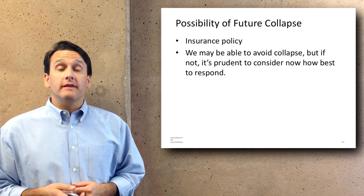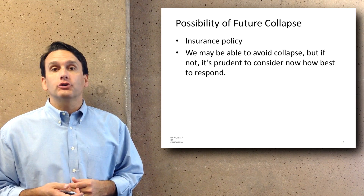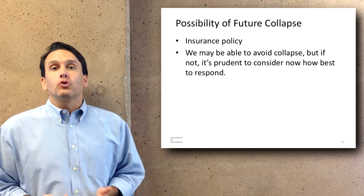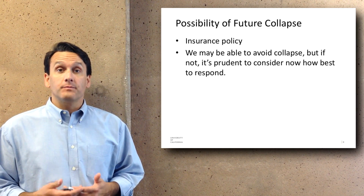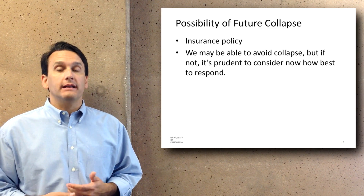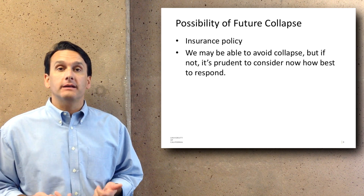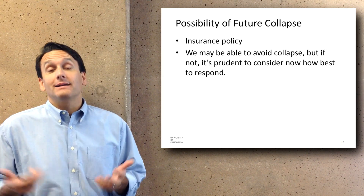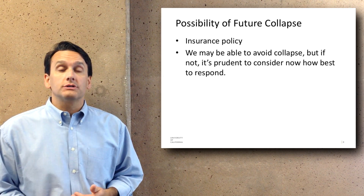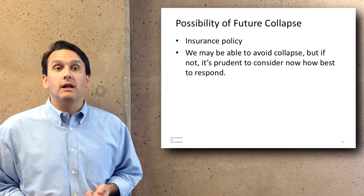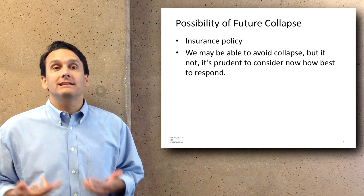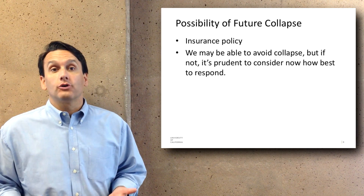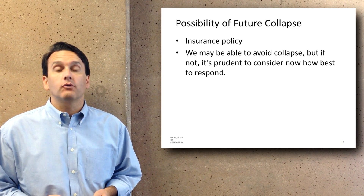In this course, one of the things we consider is the possibility of future collapse over the coming decades or a few centuries. We don't know for sure that collapse is coming — there may be some new energy source that enables us to address environmental and civilizational problems — but then again there may not be. We think it's prudent to consider now how best to respond to these kinds of problems in order to hopefully avoid a collapse, or at least prepare for one should it be forthcoming.